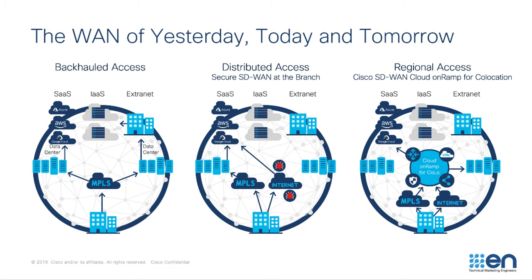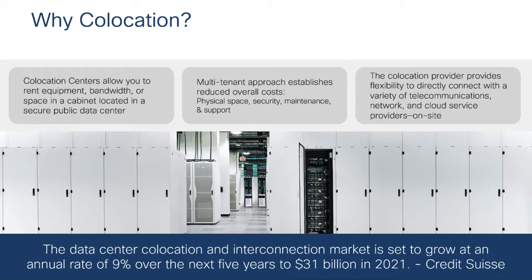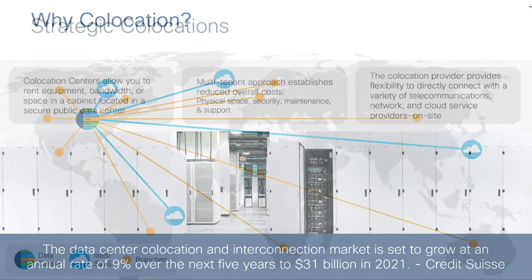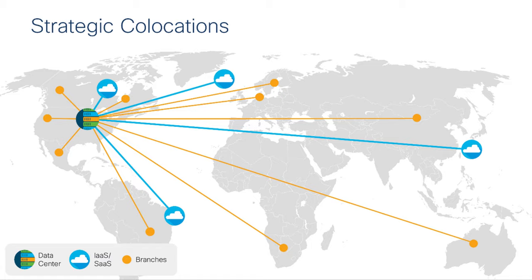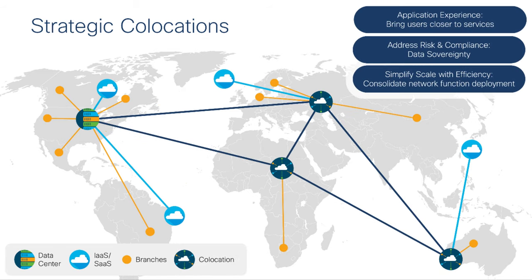This is where the notion of co-locations and regionalized internet access comes into play. Co-locations provide an excellent opportunity to optimize the middle mile — the area between your branches and the cloud. By allowing subscribers to rent equipment, space, bandwidth, and power, a customer can provide data center-like benefits with much greater geographical coverage at a fraction of the cost. Co-locations position themselves intentionally at the cloud edge to offer reasonably inexpensive, dedicated bandwidth into the cloud provider of their choice. Customers can strategically select co-location facilities with close proximity to their branch users, extending the cloud edge as close to the branch as possible, minimizing latency and optimizing the middle mile.